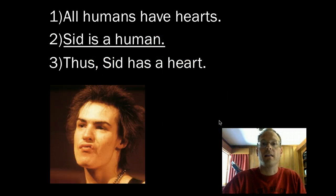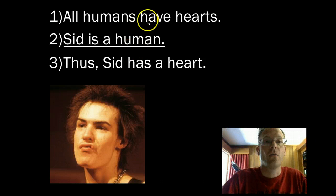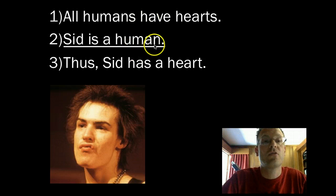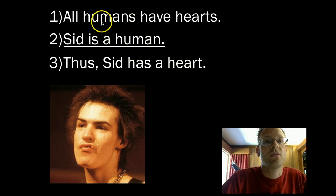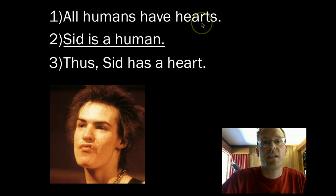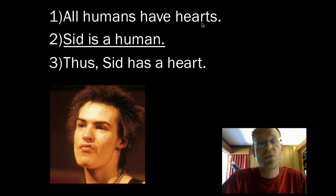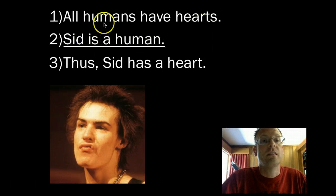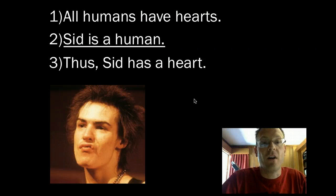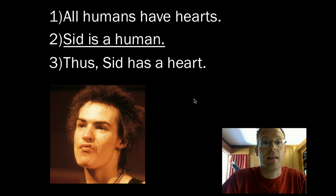Let's ask if this is valid. Is it possible for premises one and two to be true and three to be false? All humans have hearts — just suppose it's true. If Sid was a human and all humans had a heart, then it would follow that Sid has a heart. So that would be correct — it would be valid.